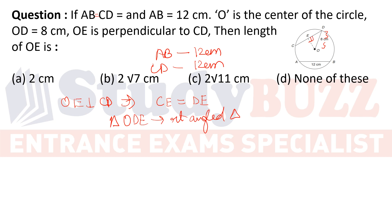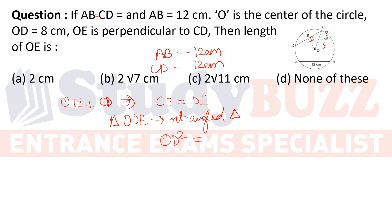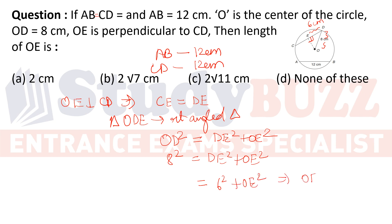Applying Pythagoras theorem: OD² = DE² + OE². OD = 8, so 8² = DE² + OE². CD = 12 cm, so DE = 6 cm. Thus 64 = 36 + OE², giving OE = √28 = 2√7. Option B is correct.